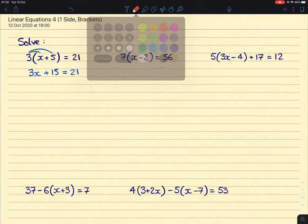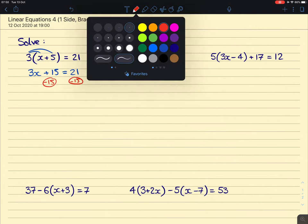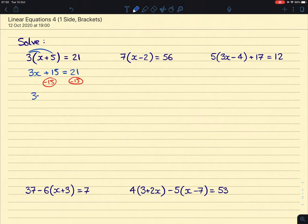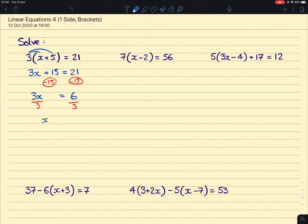And then from there, we solve the equation as we normally would. We get rid of that plus 15 first, as it's furthest away. It happens after the multiply by 3. 3x on the left, 6 on the right. And then we can divide both sides by 3 in order to get rid of that 3 that's with the x, and we'll be left with x equals 2.